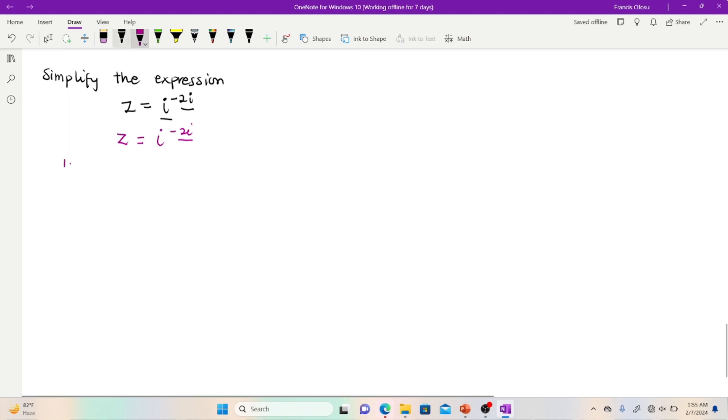So I'm going to take natural logarithm on both sides. So I'll have ln z is equal to ln of the expression i to the power negative 2i. So ln z will then be equal to, applying the property of logarithm, this will be brought down to this side. So I'm going to have negative 2i multiplying the expression ln of i.